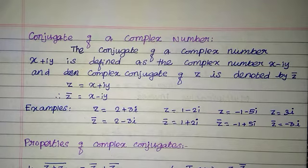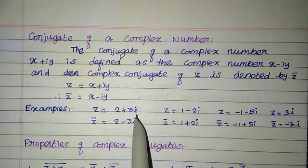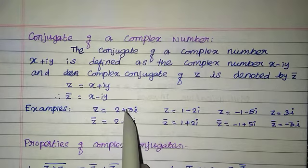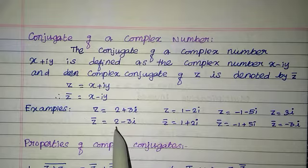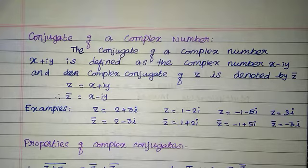To find the conjugate, change the sign of the imaginary unit. So for z equals 2 plus 3i, changing the sign of the imaginary unit gives z bar equals 2 minus 3i. To find the conjugate, just change the sign of the imaginary part.